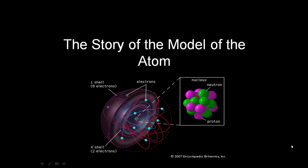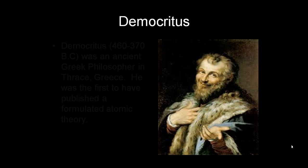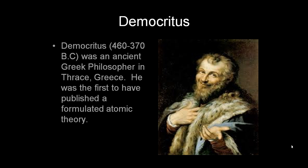This is the story of how the model of the atom came about. A long time ago, in a city called Thrace, Greece, there lived a man named Democritus.